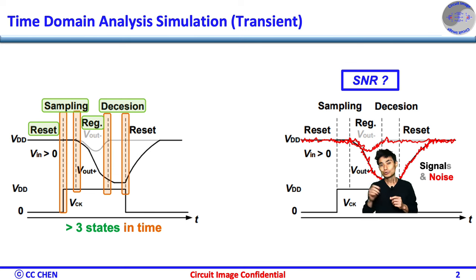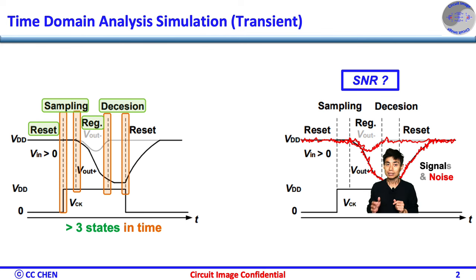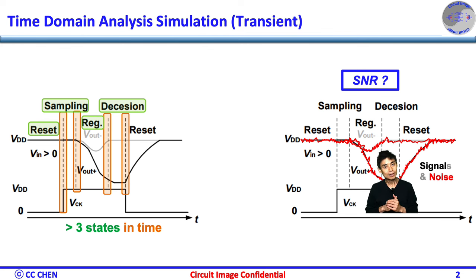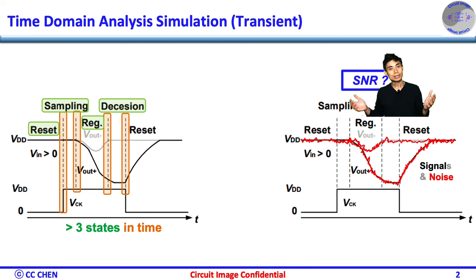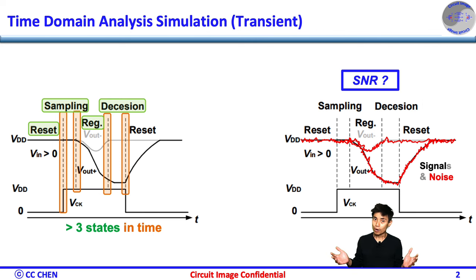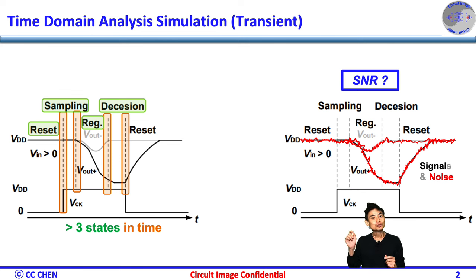Similarly, to capture the noise behavior in time, we must run the transient simulation in the time domain along with the present signal in a normal or mission operation. Then, not only the noise but also the signal level can be evaluated together to calculate the signal-to-noise ratio SNR precisely. But how does your circuit include all the thermal noise in the transient, such that you could perform the transient noise properly?